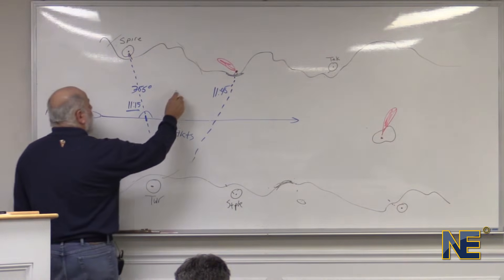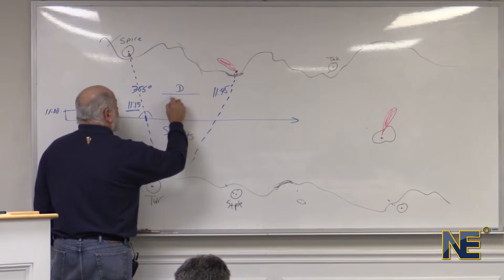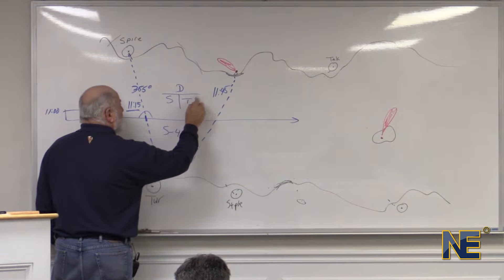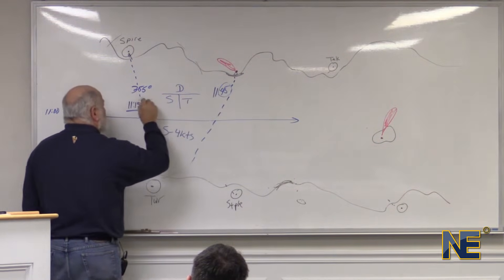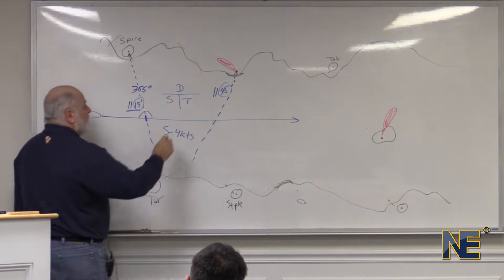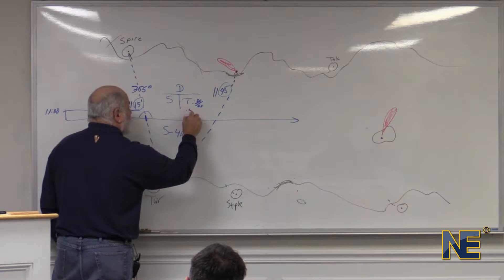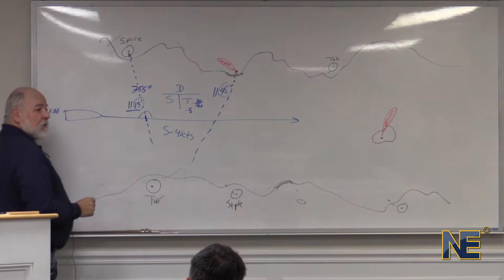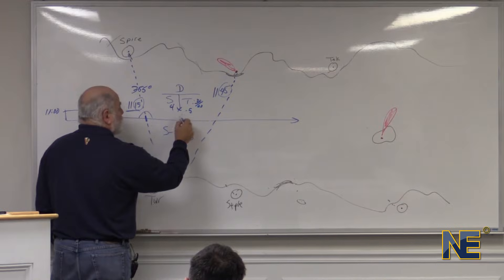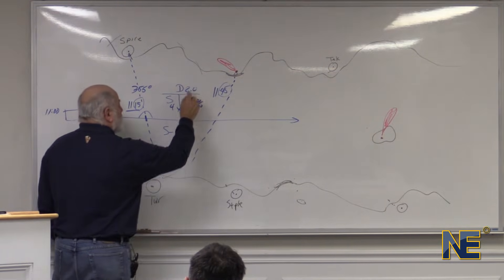So we have to do a distance, speed and time. How much time has gone by? 30 minutes divided by 60, 0.5. What's our speed? 4 knots. 4 times 0.5 is how much? 2.0.